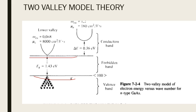In a Gunn diode, when electrons are excited and move up to the conduction band, they do not move freely. Within the conduction band there are two valleys: a lower valley and an upper valley. Both valleys are separated by a distance delta-E, called the thermal energy gap, which is 0.36 electron volts. Electrons in the lower valley will always occupy a low density of states.